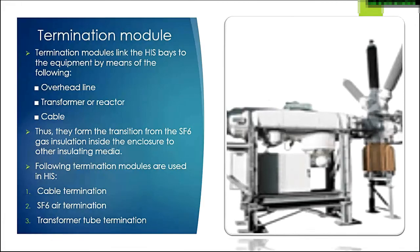Next is the termination module. Termination modules link the HIS base to equipment by means of overhead lines, transformer or reactor, and cable. They form the transition from SF6 gas insulation inside the enclosure to other insulating media. The following termination modules are used in HIS: cable termination, SF6-air termination, and transformer tube termination. The termination module is located in the orange highlighted area in the diagram.